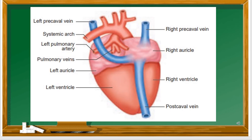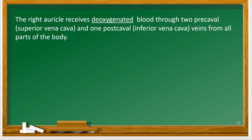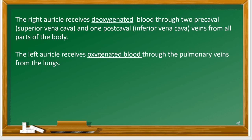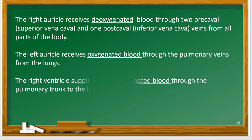The right auricle receives deoxygenated blood, and the left auricle receives oxygenated blood. Similarly, the right ventricle supplies deoxygenated blood, and the left ventricle supplies oxygenated blood.